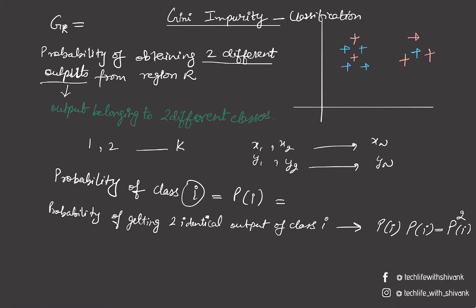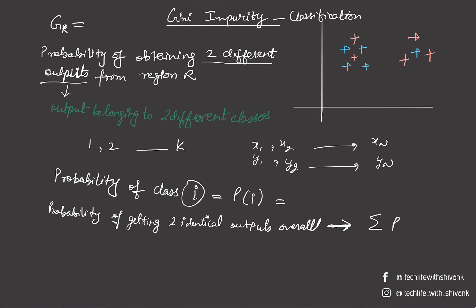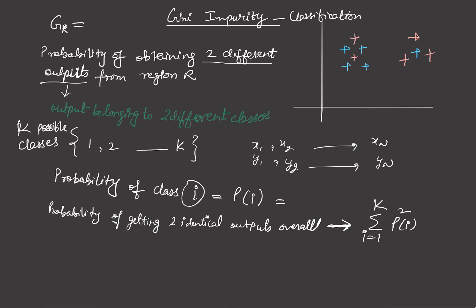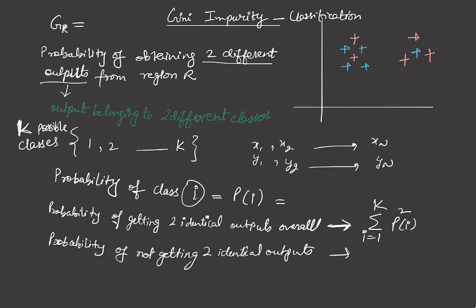The probability of getting two identical items from class 1 is p1 squared, from class 2 is p2 squared, and so on. So the probability of getting two identical outputs overall, with replacement, is Σpi² where i goes from 1 to K. Therefore, the probability of not getting two identical outputs — i.e., getting two different outputs — is 1 minus Σ(i=1 to K) pi². This is called the Gini coefficient for region R.